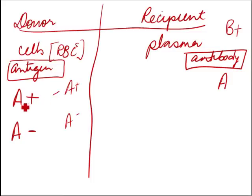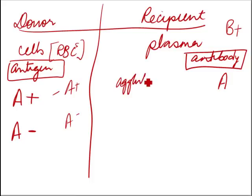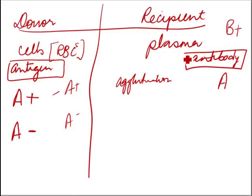However, because the donor is A group, they have antigen A, and the B positive recipient has antibody A. So if you give A blood to a B group person, the antibody will react and you will get agglutination. Therefore, an A positive person cannot donate to a B group person — whether B positive or B negative — because of this antibody A. You cannot donate to the opposite group.